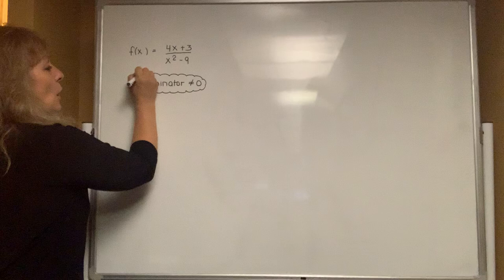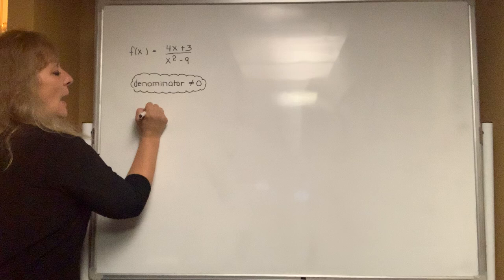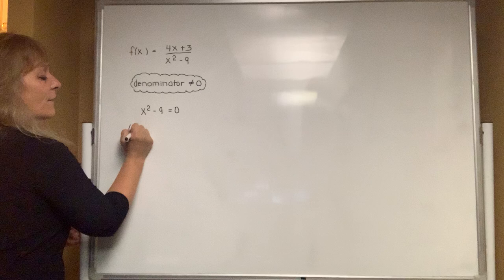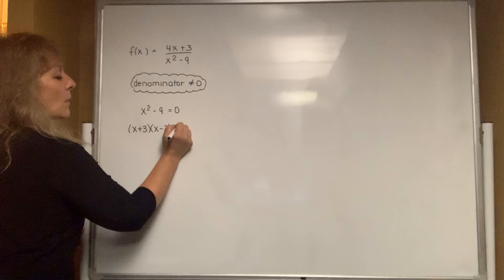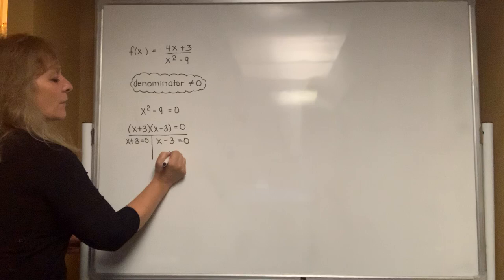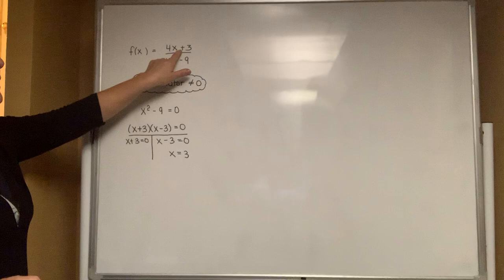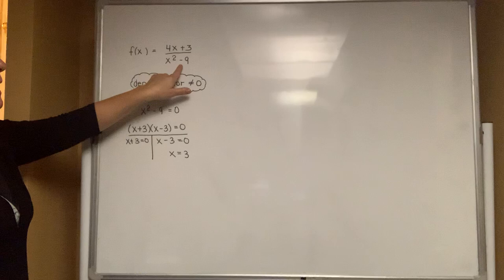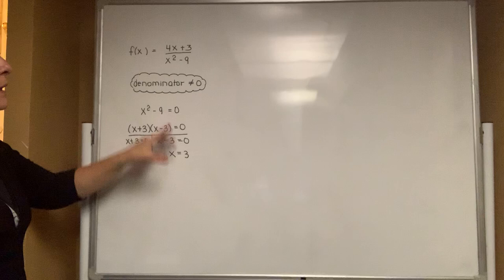Let's figure out first when the denominator is equal to zero. When you set your denominator expression equal to zero, all quadratics get factored — using difference of squares in this case — then set each one of those factors equal to zero and solve. When x equals 3, the numerator comes out to be 15 but the denominator comes out to be zero, and you are not allowed to divide by zero. Therefore, x cannot equal 3 in the domain.